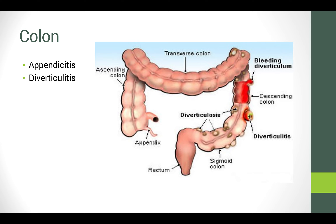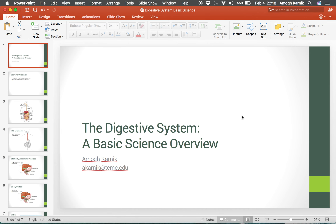The common theme between all of these conditions is the inflammation of solid visceral organs — whether it's the esophagus causing GERD, inflammation in the stomach or duodenum causing ulcers, localized inflammation of the pancreas due to excessive secretion, inflammation of the gallbladder due to stones causing cholecystitis, or inflammation in the colon causing appendicitis and diverticulitis. This has been a brief overview and we will go into more detail later on. Thanks.